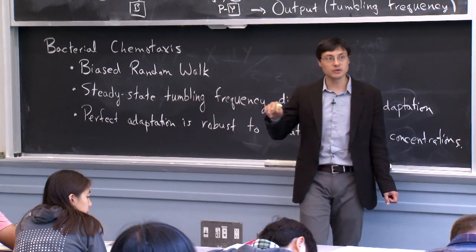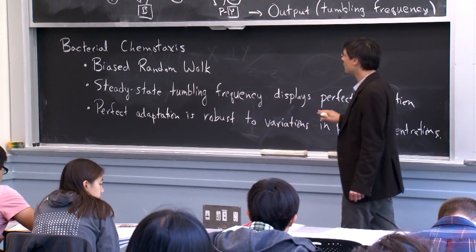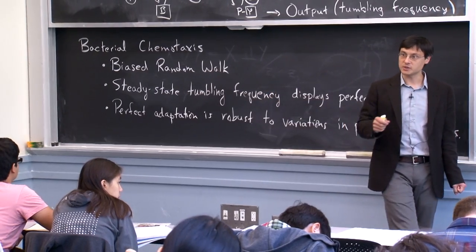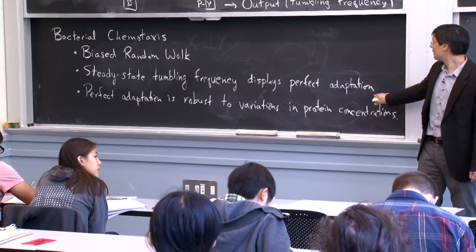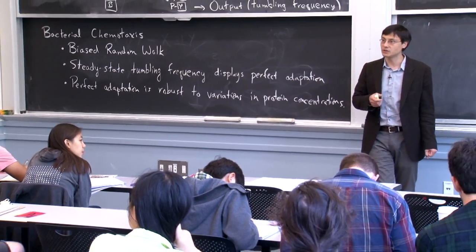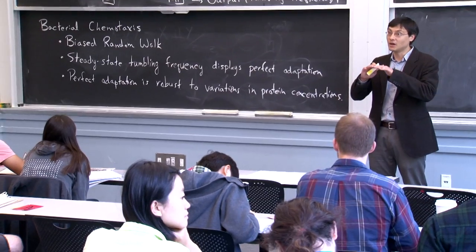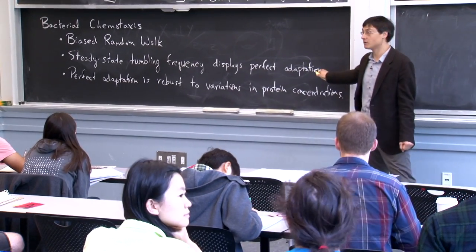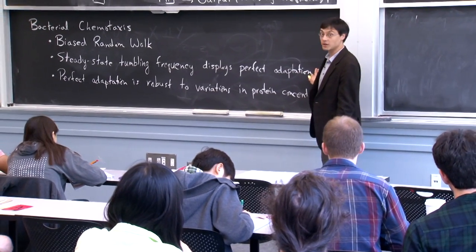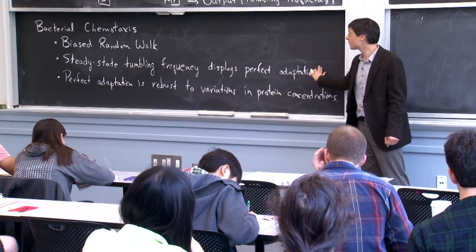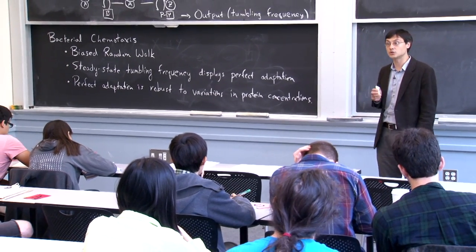The basic way they do this is by implementing what is essentially equivalent to integral feedback in engineering. The steady-state tumbling frequency displays what's known as perfect adaptation — it is not a function of the constant concentration of attractant. If you have a constant concentration of attractant, the steady-state tumbling frequency is not a function of that. E. coli and many other microorganisms implement this clever property where the steady-state frequency of changing direction is not a function of the overall attractant concentration.